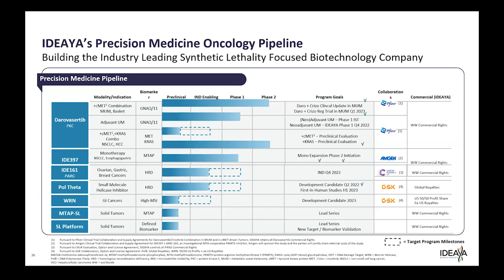A quick peek at the IDEA Biosciences pipeline: we have several collaborations with pharmaceutical companies — you can see Pfizer, Amgen, GlaxoSmithKline — and our first PKC inhibitor in the clinic, licensed from Novartis for uveal melanoma, cancer of the eye. I'm personally a cancer patient, so this is near and dear to my heart, and some of those pipeline medicines I've actually taken, so this is exciting to be part of a bigger picture where we can potentially affect patients' lives in a meaningful way.